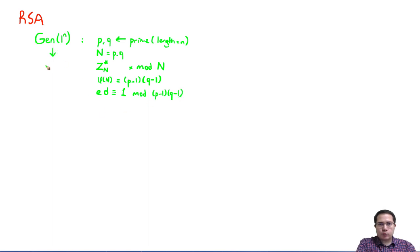So eventually this gen algorithm outputs n, e, and d. The RSA assumption states the following: for all probabilistic polynomial time adversaries A, there exists a negligible function neg(n) such that if we consider this experiment, we run the gen algorithm using the security parameter. It outputs n which defines the Z_n* group, e and d.